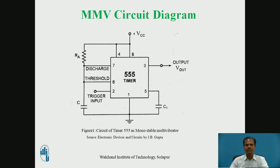This figure shows the circuit diagram for IC555 as a monostable multivibrator. Using IC555 with few external components, resistor RA and capacitor C are connected, and an additional capacitor C1 is connected at pin number 5 with respect to ground. The output signal is taken from pin number 3.